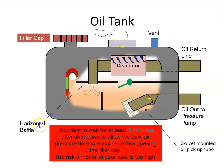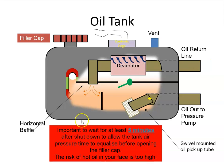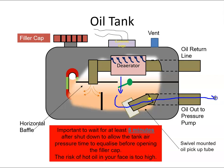When oil returns from the scavenge system it is warm and contains a lot of air, so a deaerator is used to separate them. The deaerator causes the oil to swirl — the heavier oil is thrown outward and the air collects in the center and escapes out. The air then enters the tank, helping to pressurize it, which provides a positive pressure on the oil and helps push it toward the pressure pump.